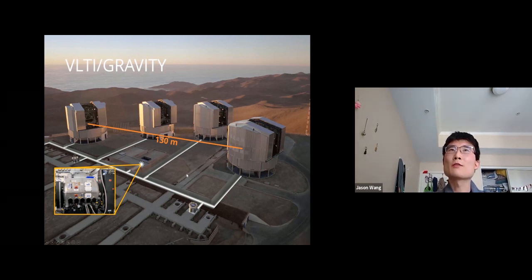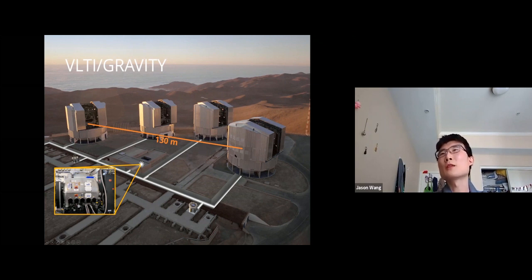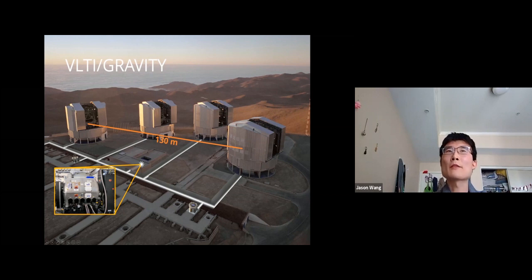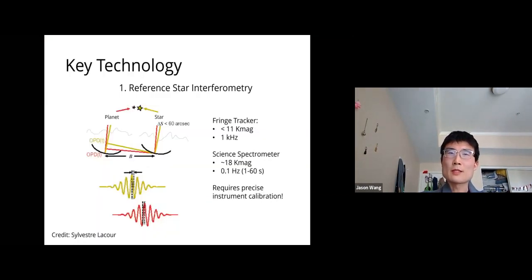I'll be talking about the VLTI instrument—an interferometry array consisting of four 8-meter telescopes at VLT in Chile. The largest baseline is 130 meters across. By combining these telescopes coherently, you can improve the angular resolution of the system by over an order of magnitude. The interferometer I'll be discussing is GRAVITY, whose cryostat is located in the interferometry room where all the beam combining happens.